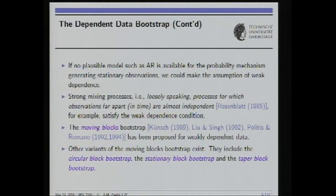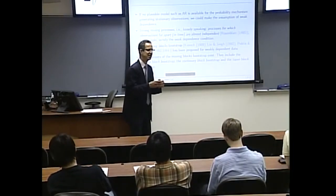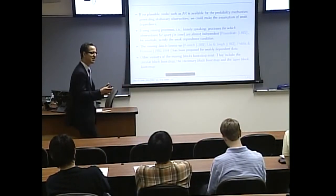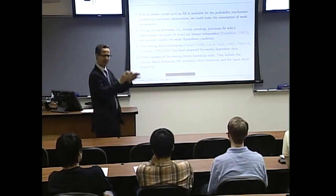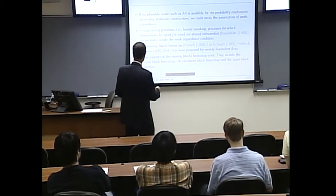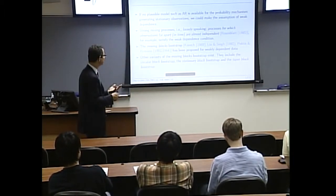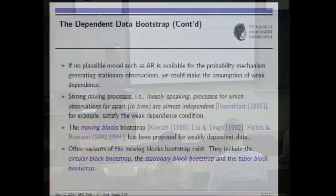This works when you know a model, but not in all cases do you have one. You cannot always assume data stems from an autoregressive process. In that case you may have to make some assumption, such as strong mixing — meaning data far apart are nearly independent, i.e., the covariance function decays fast.